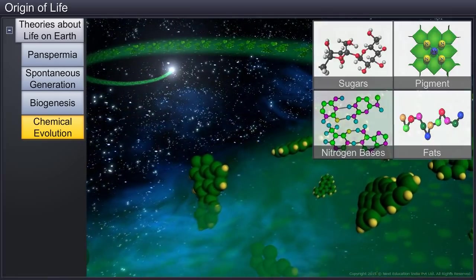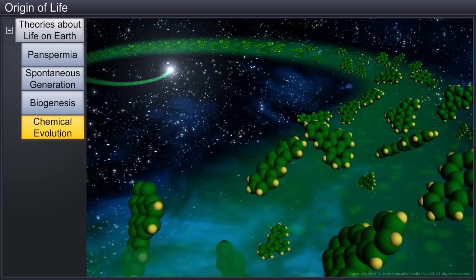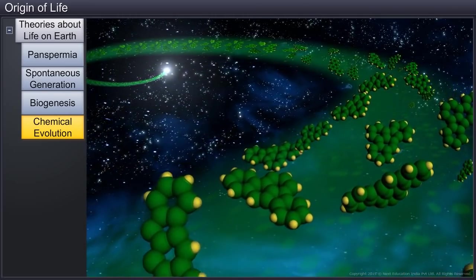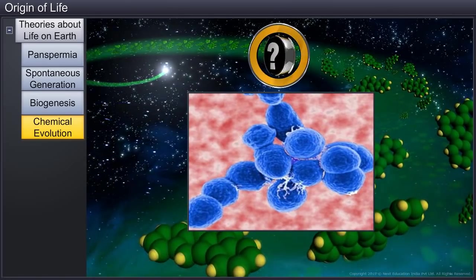Thereafter, the theory of chemical evolution was most widely accepted. However, there were still doubts about how the first cell came into existence.